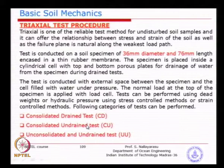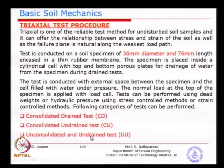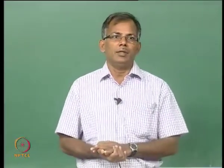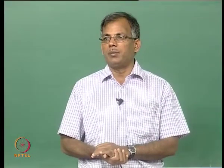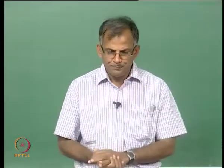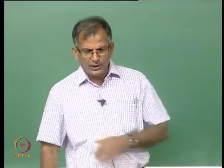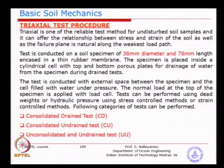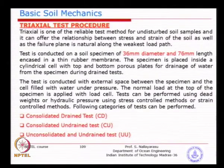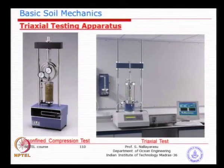There are three types of tests: Consolidated Drained (CD), Consolidated Undrained (CU), and Unconsolidated Undrained (UU). In UU, the drain valve is closed all the time — even during initial pressurization, cell pressure application, and normal loading. The specimen diameter is typically 36 mm and 76 mm in length. This is the standard size for the triaxial test. Marine samples normally use UU conditions, which are very close to field conditions.